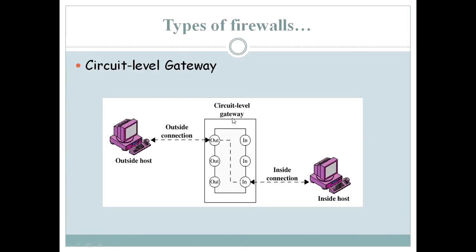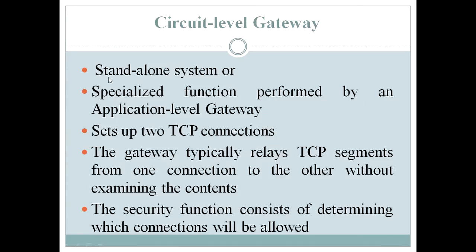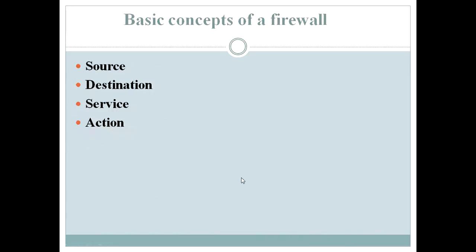The third type is the circuit level gateway. It can be a standalone system or a specialized function performed by an application level gateway. It sets up two TCP connections, and the gateway typically relays TCP segments from one connection to the other without examining the contents. The security function consists of determining which connections will be allowed.